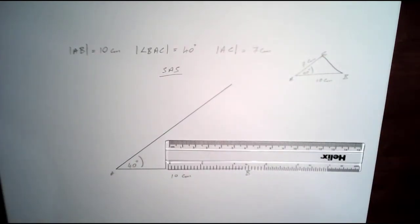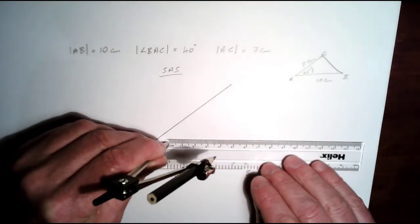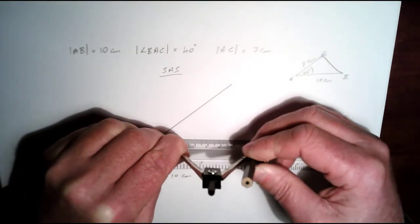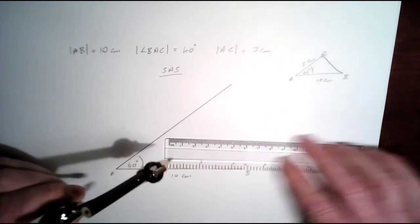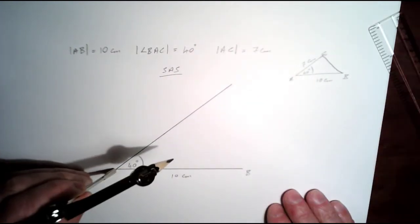Get your ruler, put your compass at 0. Go out to 7 centimeters here and put your compass at A.